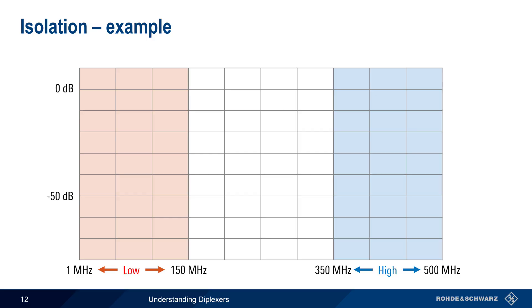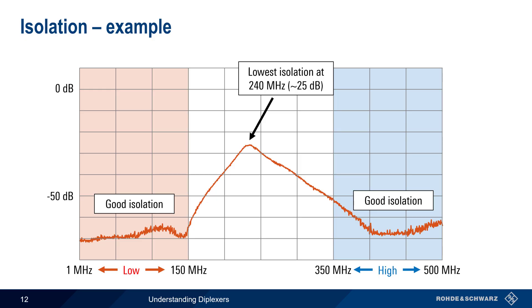Let's look at an isolation measurement. Here we can see that there is 60 to 70 dB of isolation between the low port and the high port, but only over the nominal low and high frequency ranges. Between these ranges the diplexer provides much less isolation, a signal appearing at about 240 MHz at the low port would appear at the high port with only about 25 dB of attenuation.